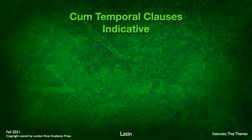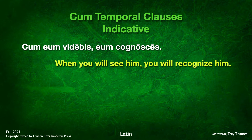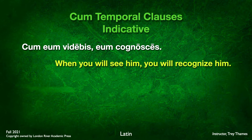Let's look at an example of a cum temporal clause with a secondary verb in the indicative mood. Cum videbis eum, eum cognoscis. Cum videbis — videbis is future tense active second person singular, 'you will see' — eum, 'him,' is the direct object. When you will see him, the main sentence eum cognoscis means 'you will recognize him.' The connection is a temporal relationship: the recognizing is happening at the same time as the seeing.